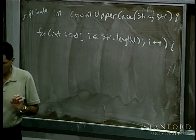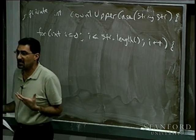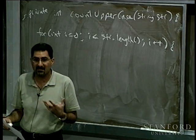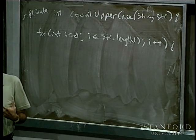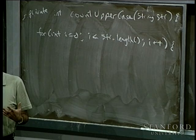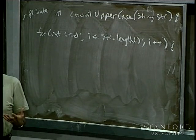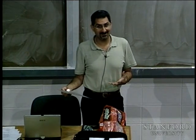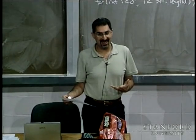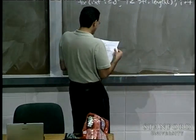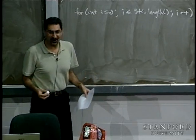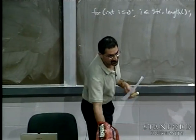Now we want to pull out each one of the characters individually to check to see if it's an uppercase character. What method might we use to do that — to get a character out of a string in a particular position? charAt. We're going to use one of the methods from the character class — the new funky way.